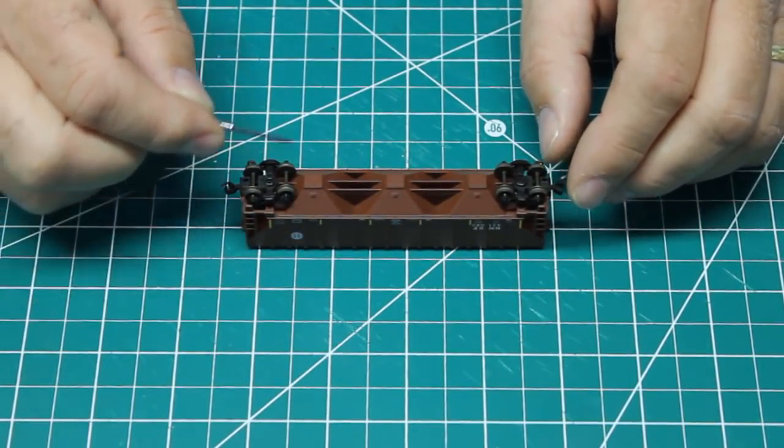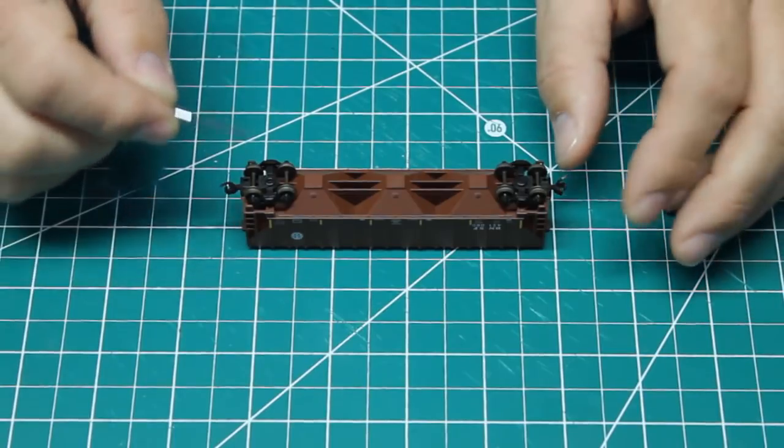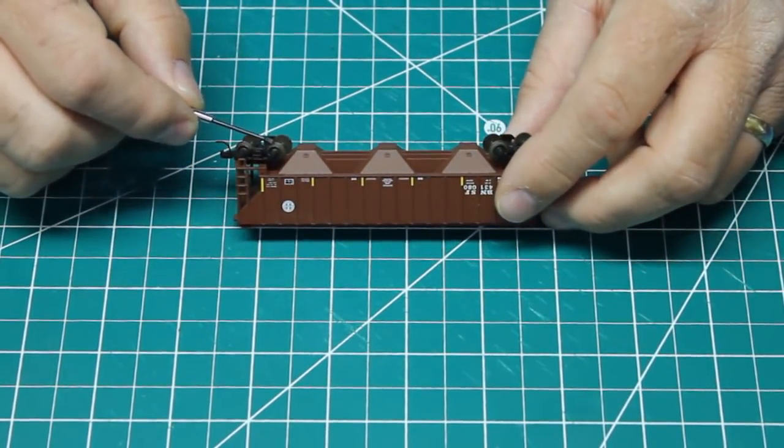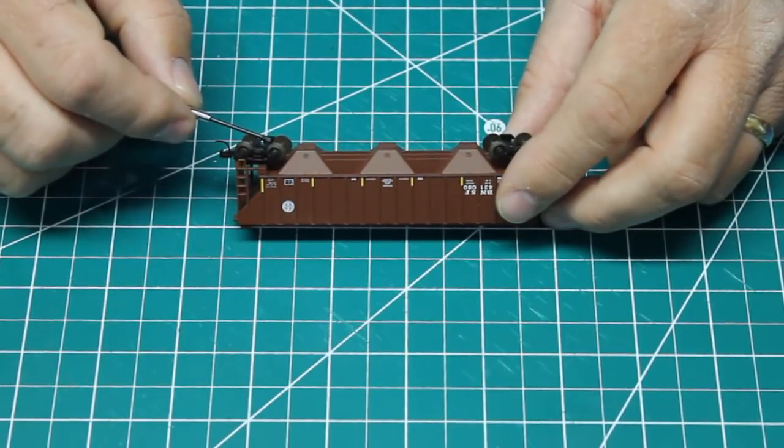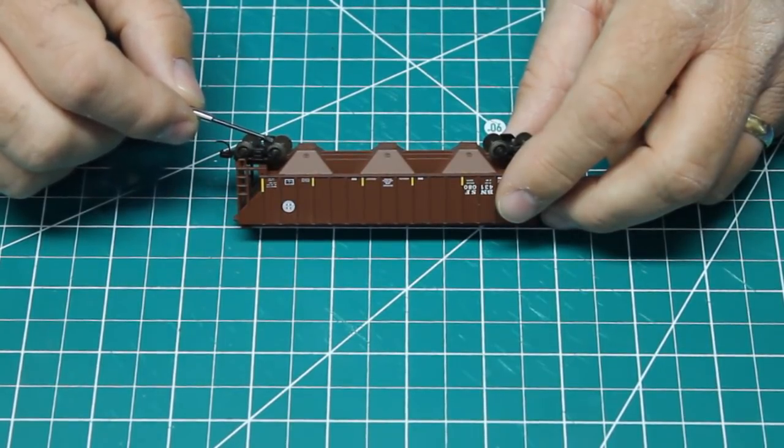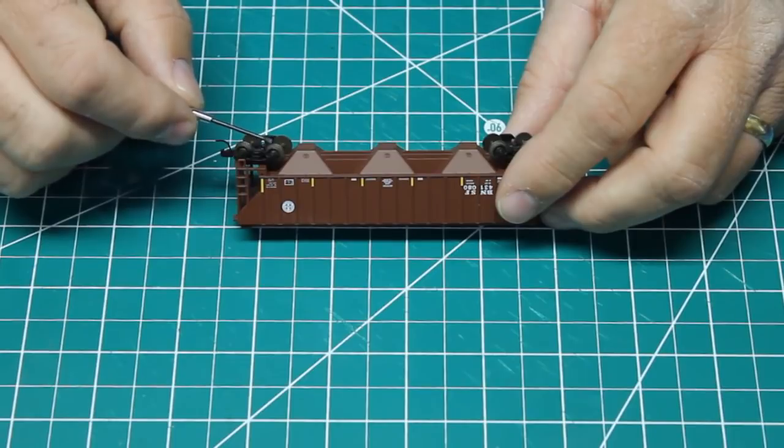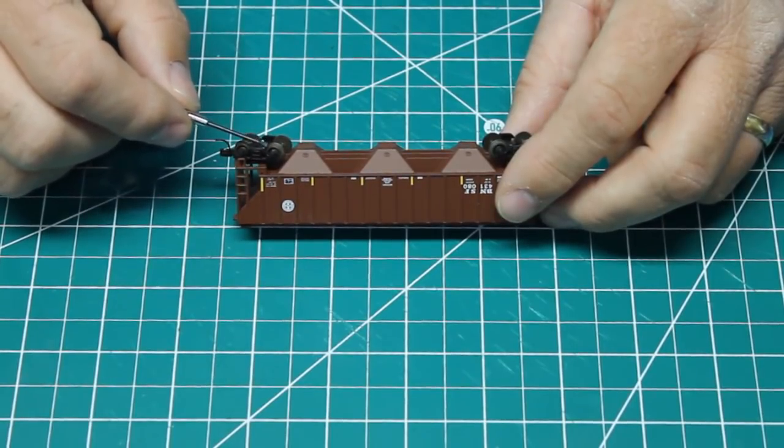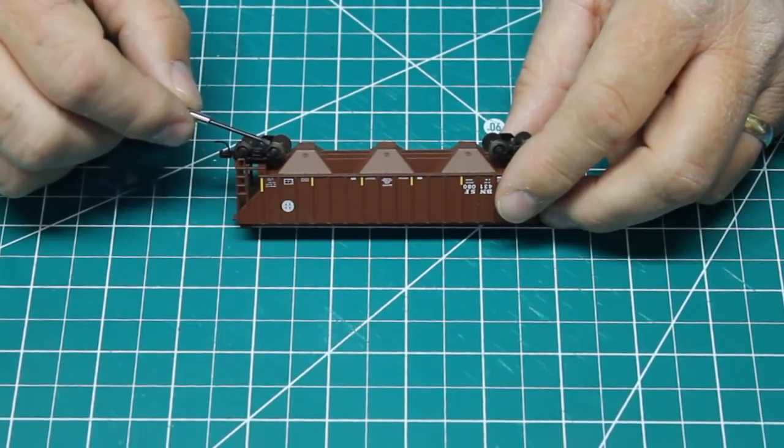And when plastic wheel sets pick up that grime, they also redistribute it across your layout. Also, I like to upgrade wheel sets because plastic wheel sets, even the modern ones, tend to have fairly oversized flanges. And I don't like the way they look and also they will not run as well on finer track like code 55 or code 40 track.